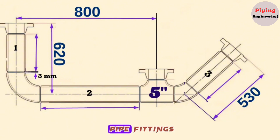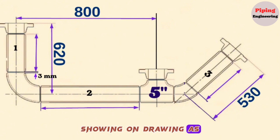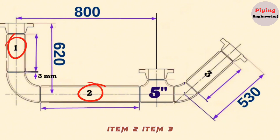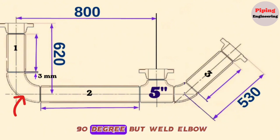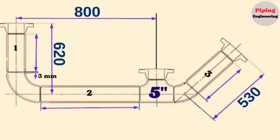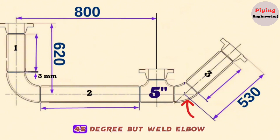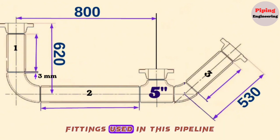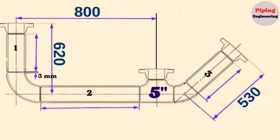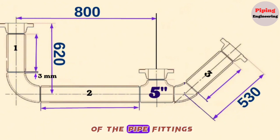This pipeline consists of the following pipe fittings: 3 off 5-inch pipe pieces shown on the drawing as Item 1, Item 2, and Item 3; 3 off 5-inch weld neck flanges; 1 off 5-inch 90-degree butt weld elbow; 1 piece 5-inch equal pipe tee; and 1 off 5-inch 45-degree butt weld elbow. We can find the dimensions of these pipe fittings from their dimension charts.